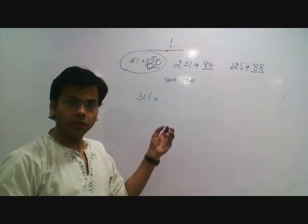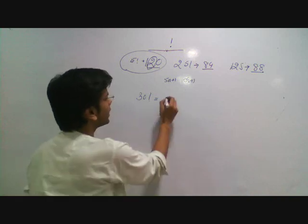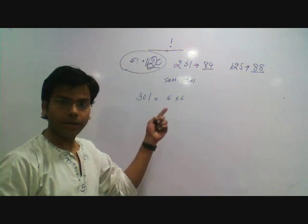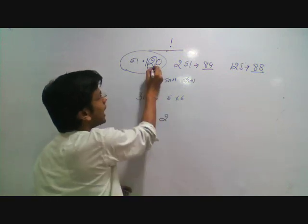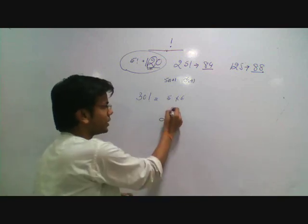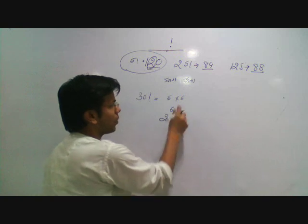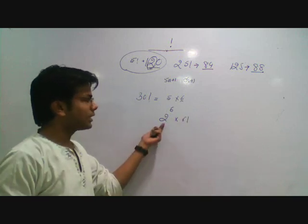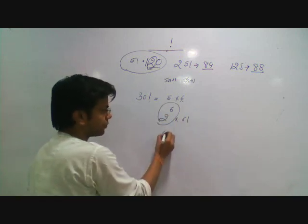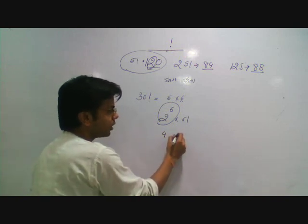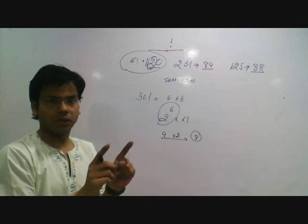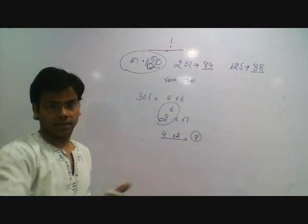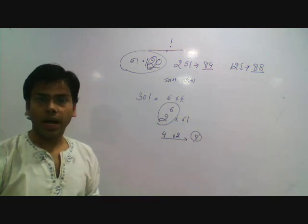For 30 factorial: 30 = 5 into 6, so we have 6 bundles of 5. For each bundle of 5 we get 2 as a non-zero digit, and we have 6 bundles, so 2 raised to power 6. For the 6 bundles we get 1, 2, 3, 4, 5, 6 — that is 6 factorial. The last digit of 2 raised to power 6 is 4. And 6 factorial ends with 2. So the total is 4 into 2 equals 8. So 30 factorial has 8 as the last non-zero digit.